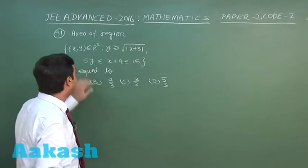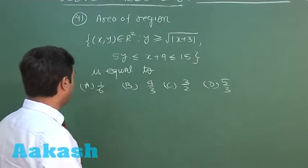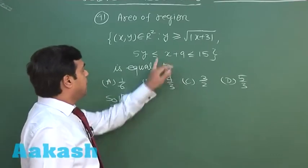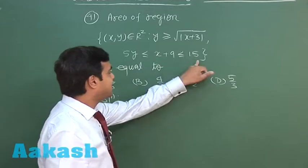Let us take question number 41: area of the region bounded by this one is equal to. Let us start this one. x plus 9 is greater than or equal to 5y but less than or equal to 15.